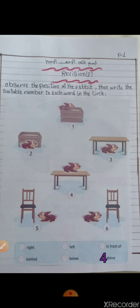Picture number five, where is the rabbit? At the right or the left? Excellent, at the right of the chair. So here at the right, we write number five.